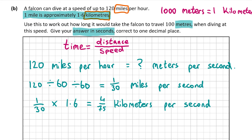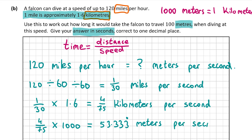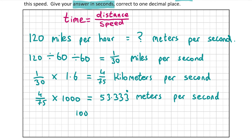Now I just need to convert from kilometers per second to meters per second. Since 1 kilometer = 1000 meters, I multiply 4/75 by 1000, which gives 53.333... meters per second. So 120 miles per hour is equivalent to 53.333... meters per second. Now I can plug this into the formula: time = distance ÷ speed = 100 ÷ 53.333..., which gives 1.875.